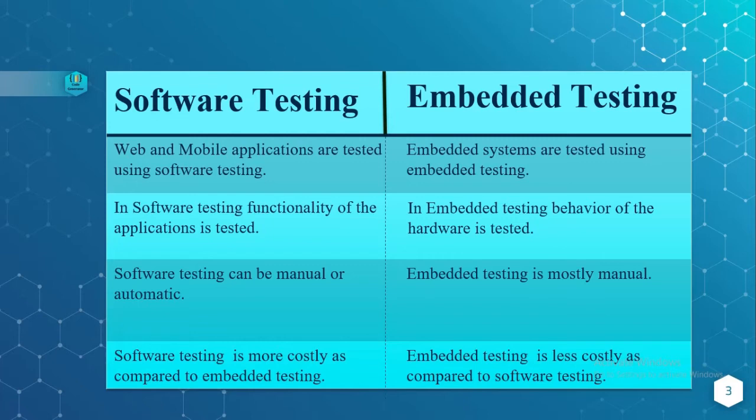In software testing, the functionality of the applications is tested, whereas embedded testing tests the behavior of the hardware. Software testing can be done manually or automatically — it requires less manual work and more automation.